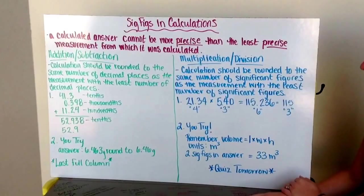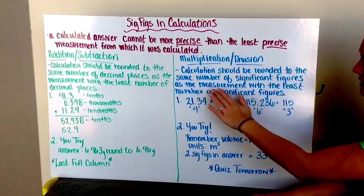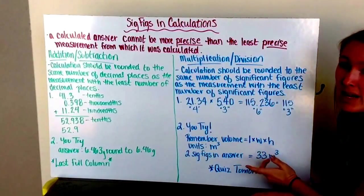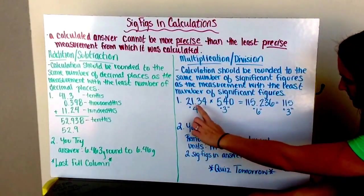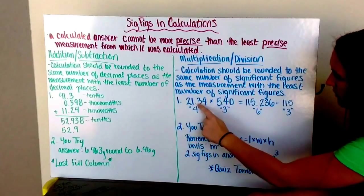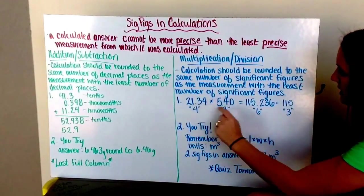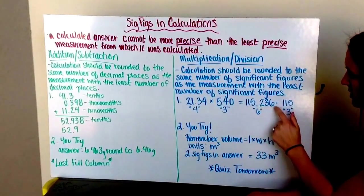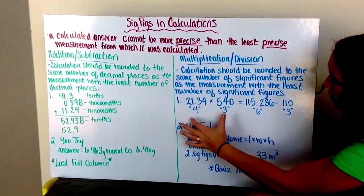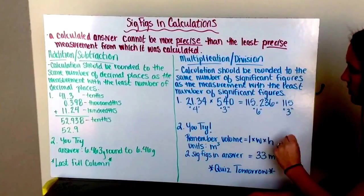For multiplication and division, calculations should be rounded to the same number of significant figures as the measurement with the least number of significant figures. I have 21.34, 4 significant figures. 5.40 has 3 significant figures. When I multiply the 2 together, I get 115.236. This right now has 6 significant figures, but my 2 items being multiplied together, one only has 3. So that means my final answer could also only have 3.